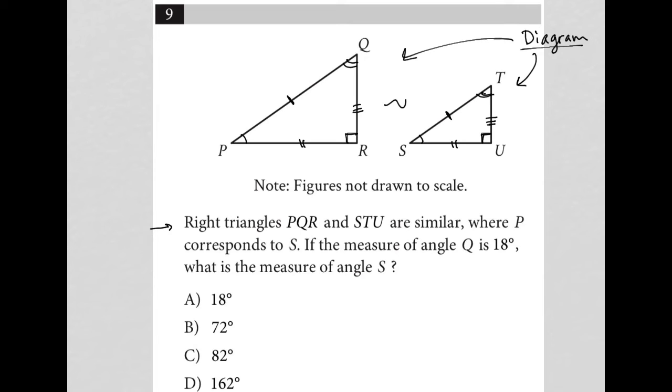So where P and S - okay, so right triangles PQR and STU are similar, where P corresponds to S. If the measure of angle Q is 18 degrees, so this is 18, which means this is 18, what is the measure of angle S?